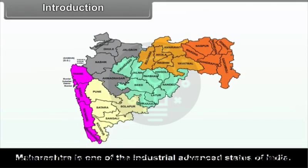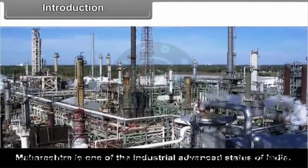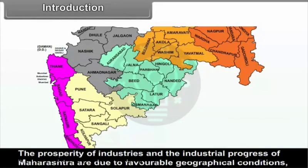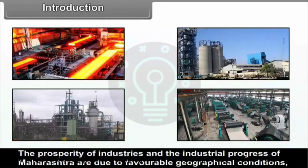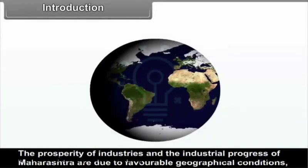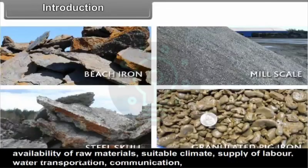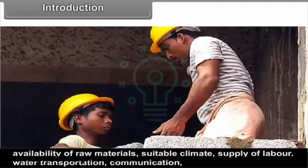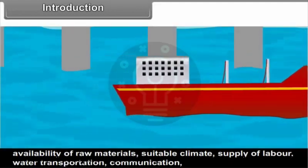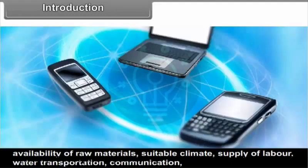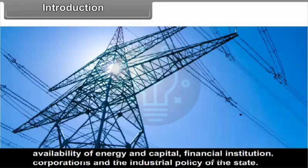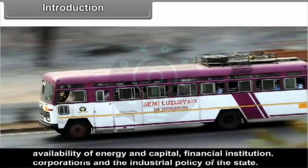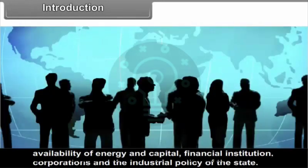Maharashtra is one of the industrially advanced states of India. The prosperity of industries and the industrial progress of Maharashtra are due to favourable geographical conditions, availability of raw materials, suitable climate, supply of labour, water, transportation, communication, availability of energy and capital, financial institutions, corporations, and the industrial policy of the state.